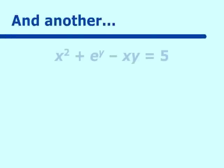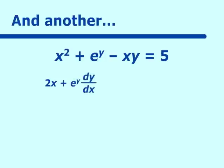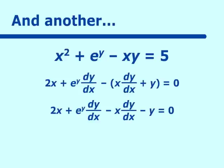Let's try another example. We see x squared — no problem. We have e to the y, so we need dy/dx. We have a product rule term, and the derivative of 5 is 0. We get 2x plus e to the y dy/dx, plus a minus sign, and then by product rule: x times dy/dx plus y times 1, equals 0. Distributing, we have 2x plus e to the y dy/dx minus x dy/dx minus y equals 0.